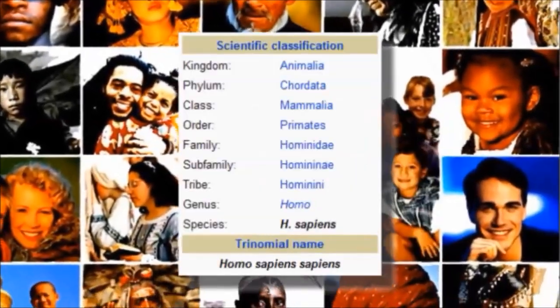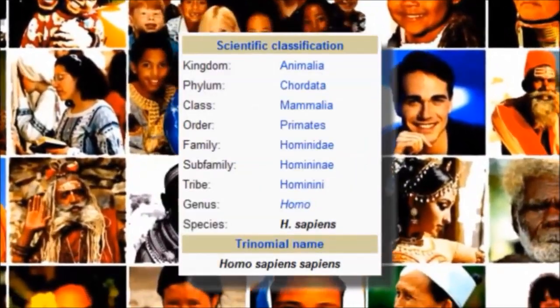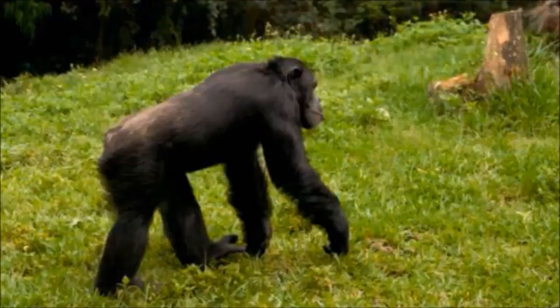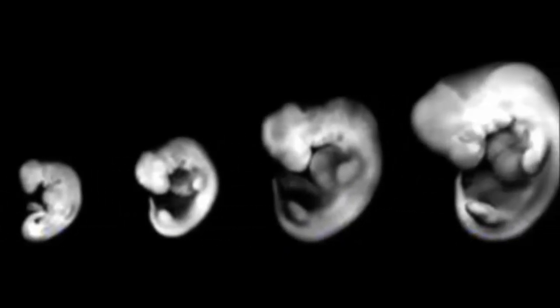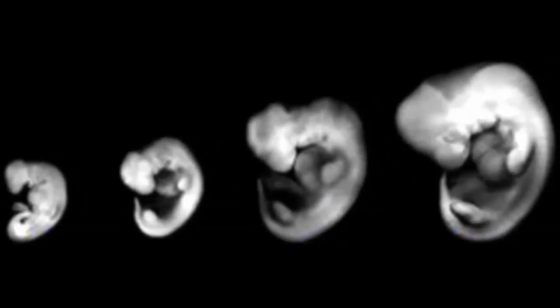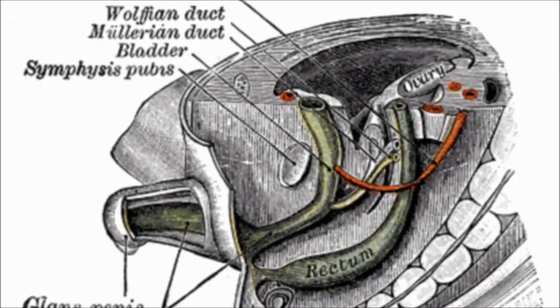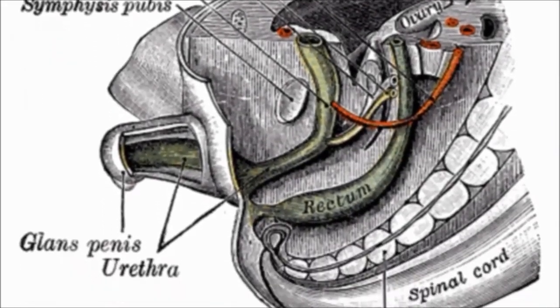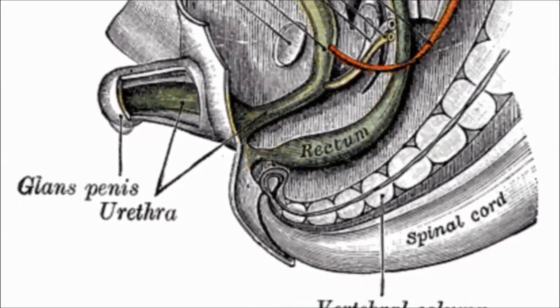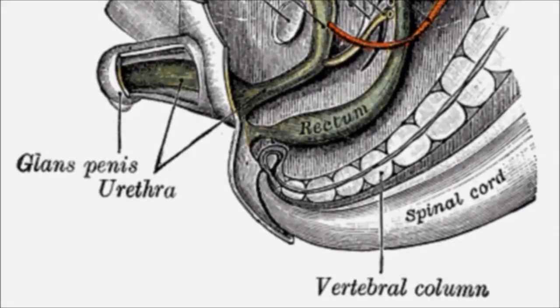Homo sapiens are taxonomically classified as apes, and one of the defining characteristics of apes is a lack of an external tail. However, human embryos display the initial signs of a tail during our early development. Between 4 and 5 weeks of age, the normal human embryo has 10 to 12 developing tail vertebrae that extend beyond the anus and legs, accounting for more than 10% of the embryo's total length. The embryonic tail is composed of several complex tissues besides the developing vertebrae, including a secondary neural tube, a notochord, tailgut, and mesenchyme.